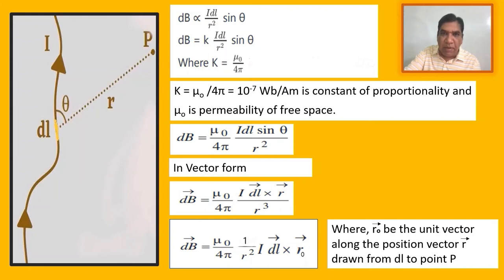In vector form, we write vector dB equals μ₀ over 4π times I times vector dl cross vector r over R cubed. This can also be written as vector dB equals μ₀ over 4π times 1 over R squared times I times vector dl cross vector r₀, where vector r₀ is the unit vector along the position vector r drawn from dl to point P.